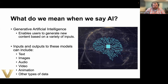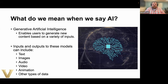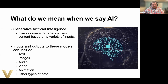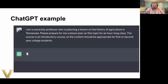The best way to start is to be clear about what we mean when we say AI. For the purposes of this presentation, I really want to focus on one specific type called generative AI. That is a specific type in that it enables users to generate something — it could be text, an image, audio, video, code, or a lot of things — allowing users to create something.